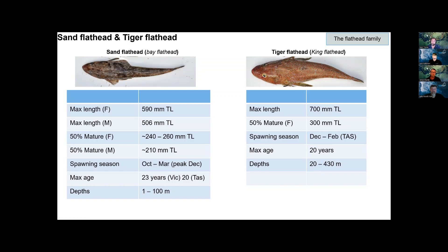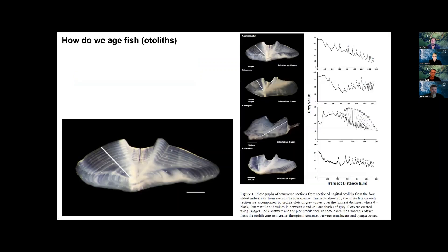Understanding this distinction becomes important when we talk about the fisheries targeting different species. The frame collection program is really useful here — this is how we do baseline preliminary assessments for many species. We look at age composition moving through year to year; some years there'll be lots of fish born in that year, other years fewer.